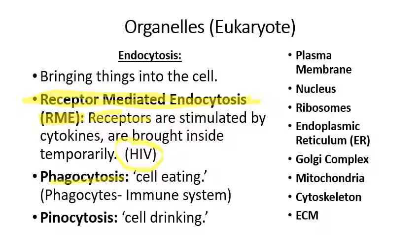Another type of endocytosis is phagocytosis — the word 'phago' is ancient Greek for 'to eat,' so this is literally cell eating. The plasma membrane reaches out and envelops a particle of food outside the cell and pulls it inside to consume it. Pinocytosis is where the cell membrane reaches out and engulfs a bunch of fluid and brings it inside — technically cell drinking. You need to be familiar with all three forms of endocytosis: receptor-mediated endocytosis (RME), phagocytosis, and pinocytosis.